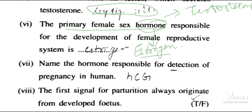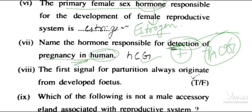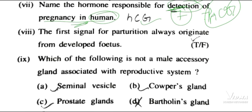Name the hormone responsible for the detection of pregnancy in humans. After 7 days of pregnancy, there is a hormone called HCG — Human Chorionic Gonadotrophin hormone — which is basically helpful in the detection of pregnancy in human females.